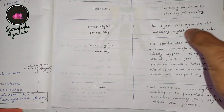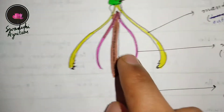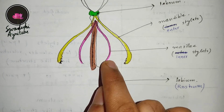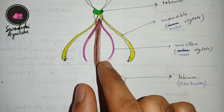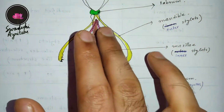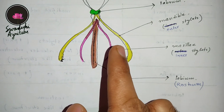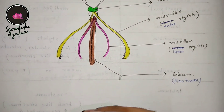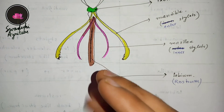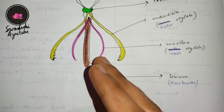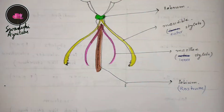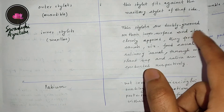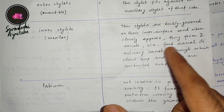The main structure is the inner stylet — the maxillary stylet. The pink structures are the inner stylet, which is the modified version of the maxilla. When the two maxillary stylets join together, they form two canals: a food canal and a salivary canal. Through the food canal, the insect takes up plant sap; through the salivary canal, it secretes saliva, which mixes with the plant sap before entering the digestive system. These stylets are grooved on their inner surface and when closely opposed they form these two canals.